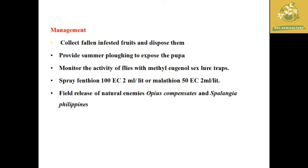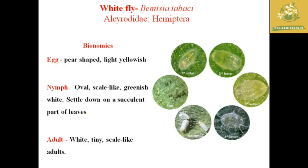For controlling fruit fly, fallen and infested fruits should be picked up and disposed of, and soil should be ploughed to expose pupae. Monitor activity with methyl eugenol lure traps placed at 10 per hectare. Spraying of fenithion 100 EC at 2 ml per liter or malathion 50 EC at 2 ml per liter can be done at the field level. Natural enemies like Opius compensatus and Palagnia philippines can also be released.